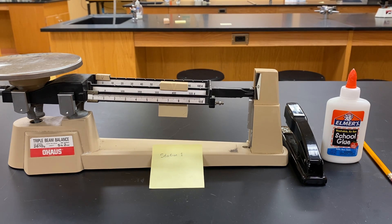Here we are at station one where we are asked to find the mass of the following items. From left to right I've set the stapler, the bottle of Elmer's glue, and an unsharpened pencil.